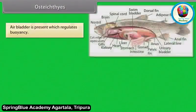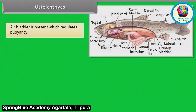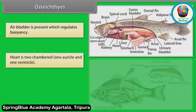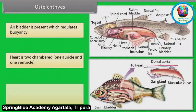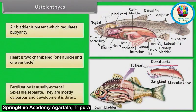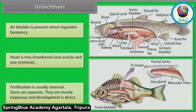Air bladder is present, which regulates buoyancy. Heart is two-chambered — one auricle and one ventricle. Fertilization is usually external. Sexes are separate. They are mostly oviparous and development is direct.